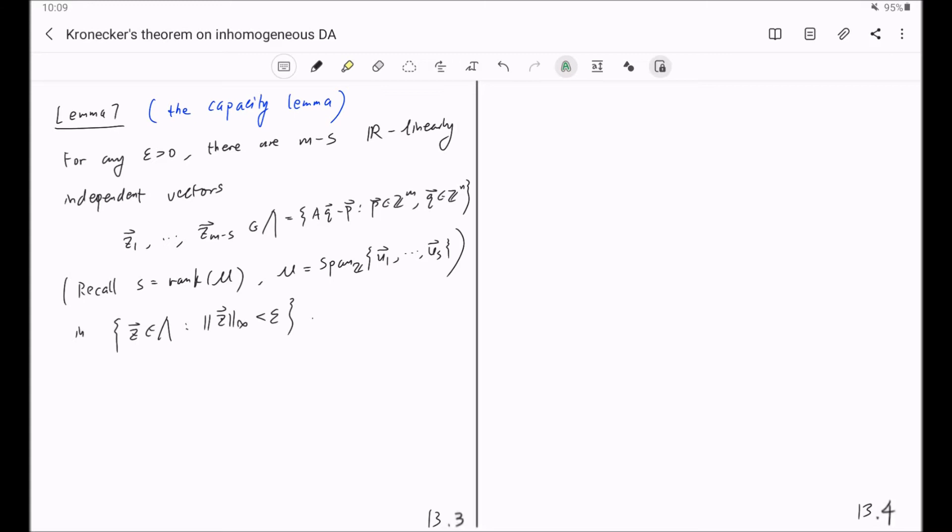This shows as long as this S is small, namely as long as the rank of M is small, this lambda will have a big capacity at the origin. Namely, it could contain a lot of linearly independent vectors around the origin.